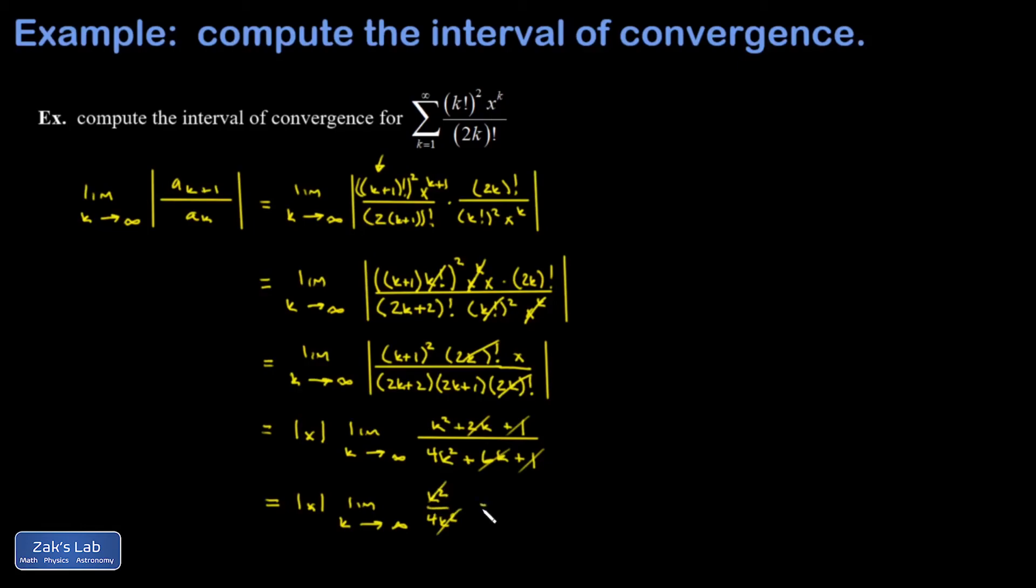And so I end up with absolute value of x times 1/4. And again, this series is going to converge as long as the result of this ratio test limit is less than 1. That's going to give us the conditions on x for which this converges.